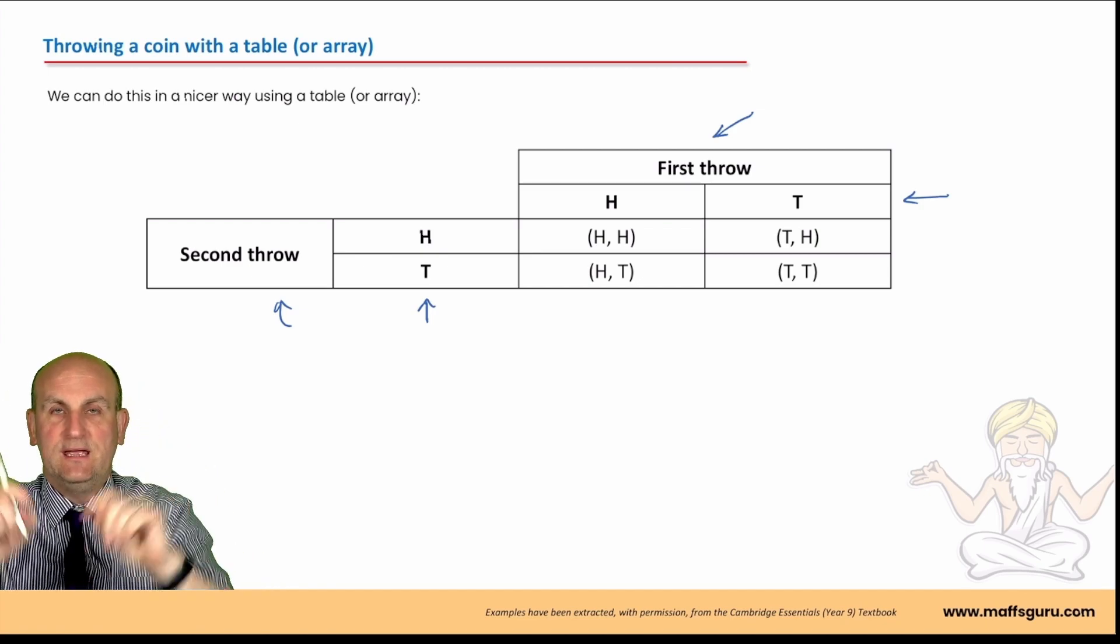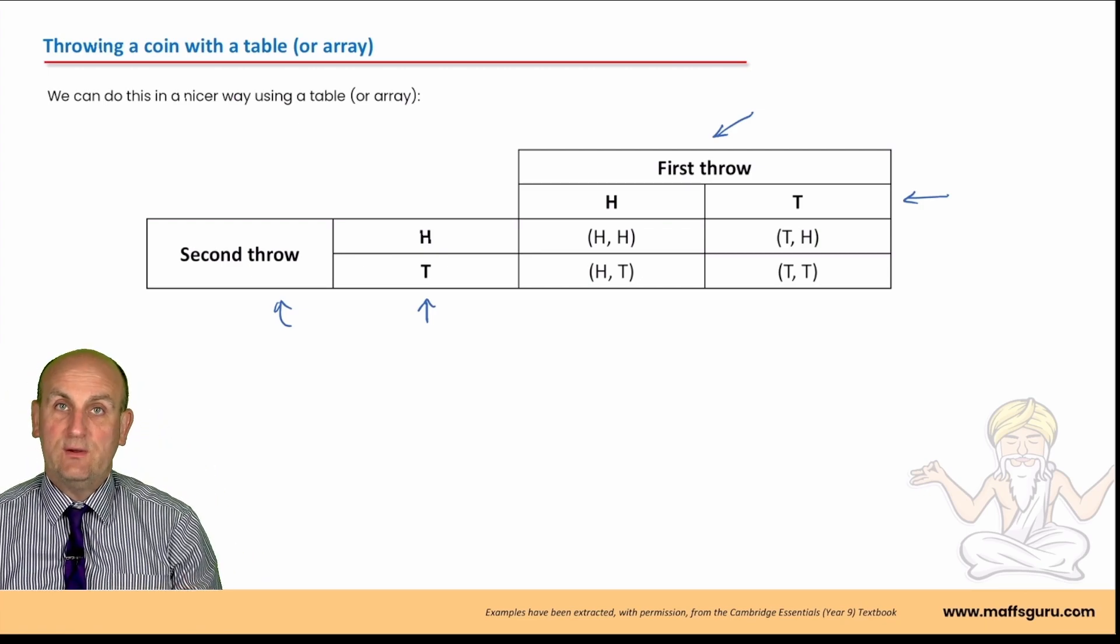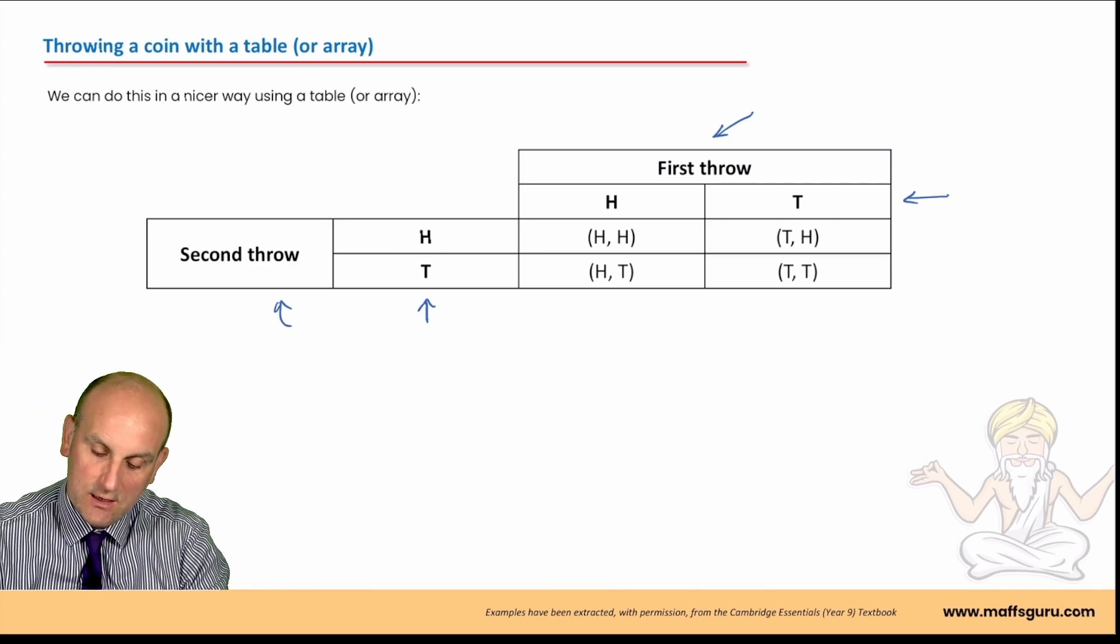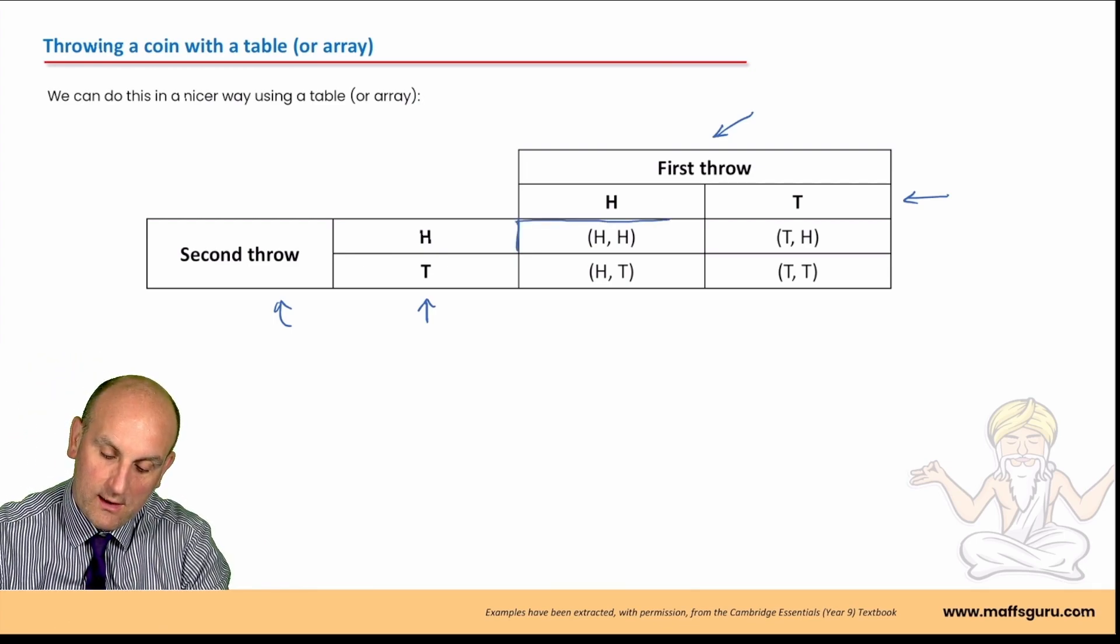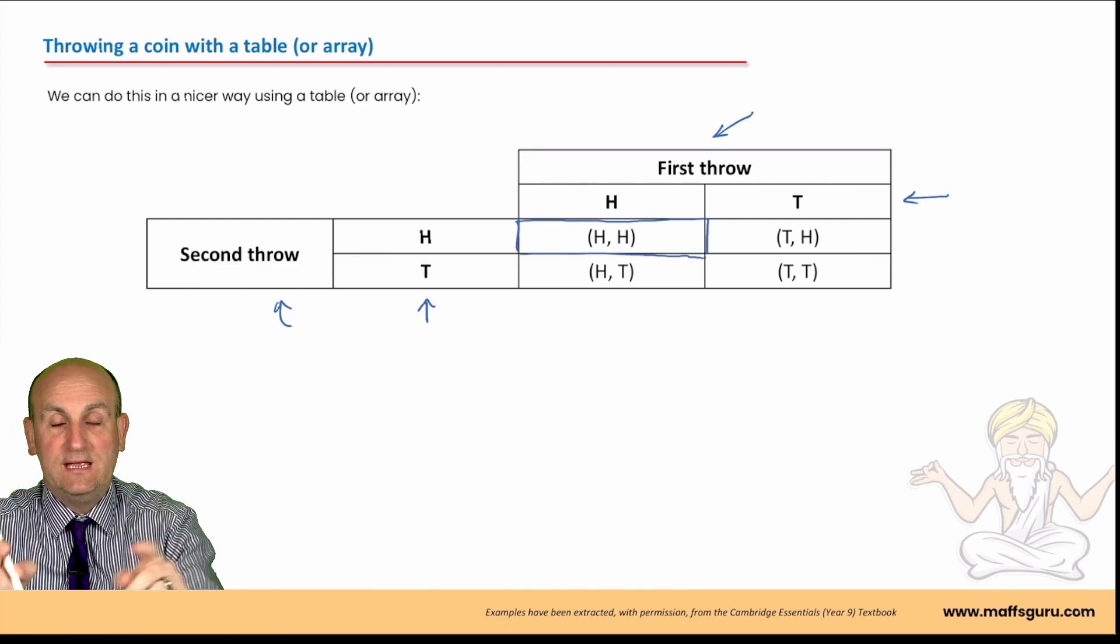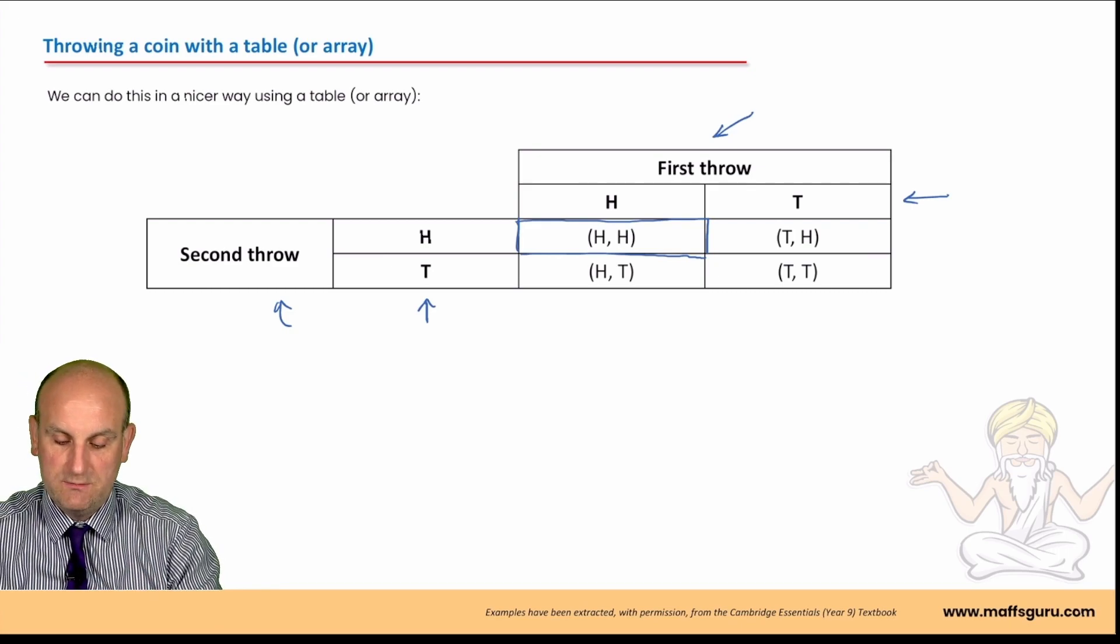Now, what are these things in brackets? Well, that's an outcome, isn't it? That's a possible way of throwing my two coins. So, if I look at this one here that I am now highlighting in blue, what do we notice? Head, head. Now, it's written in brackets for a reason. I'll explain why in just a moment.